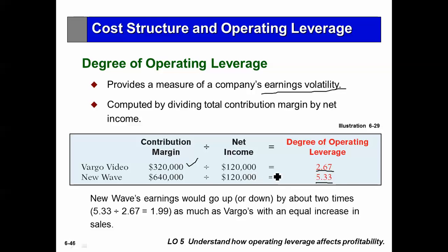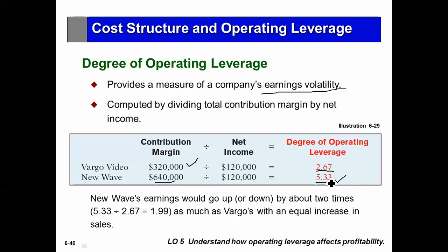Another way to look at it: a 10% increase in sales revenue with a degree of operating leverage of 2.67 gives Vargo a 26.7% increase in net income. For New Wave, a 10% increase in sales results in a 53% increase in net income — going from $120,000 to about $180,000 or more. This demonstrates New Wave's much higher degree of operating leverage. Conversely, if sales go down by 10%, New Wave's net income goes down by 53%, cutting it nearly in half to about $60,000. That's what the degree of operating leverage means.